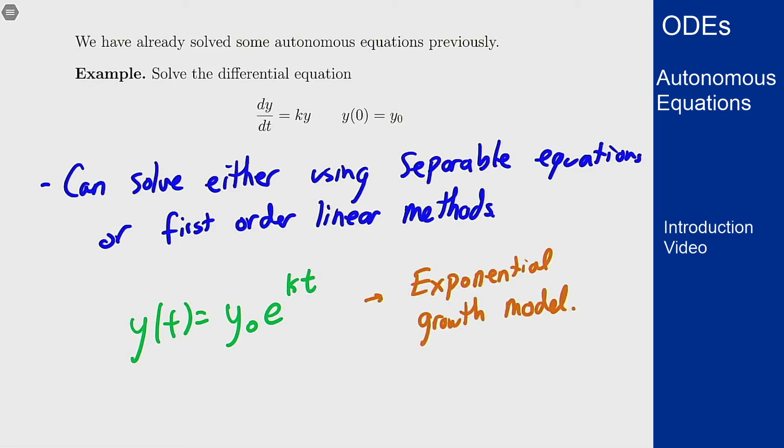which is our standard exponential growth model. This can show up in population models and economics applications, a lot of different places. But this is an autonomous equation. The function over here